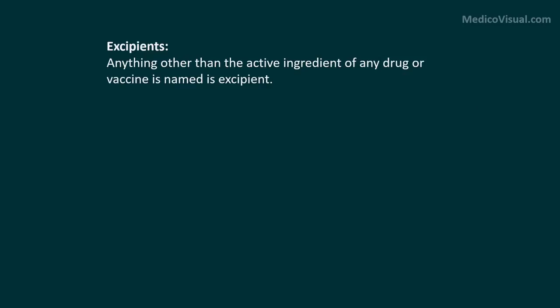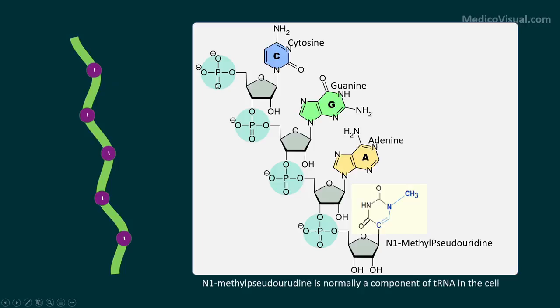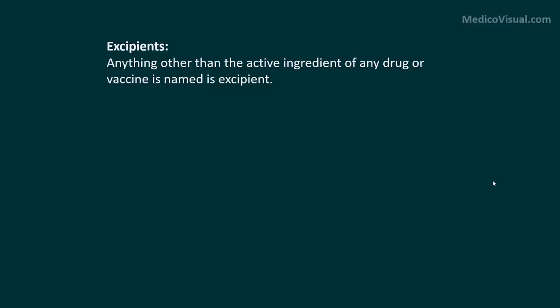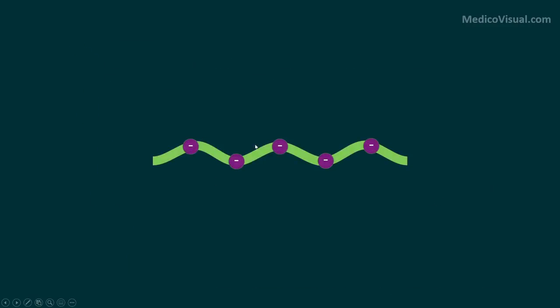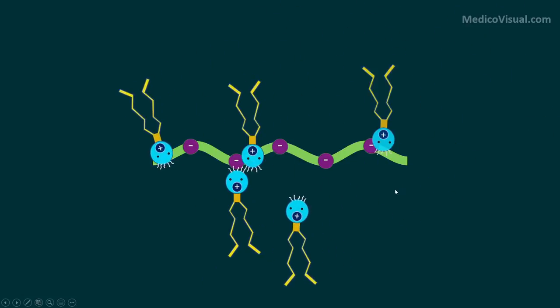Now, let's talk about excipients. Anything other than the active ingredient of any drug or vaccine is named as excipient. This is the negatively charged mRNA and by the way why it is negatively charged? It is negatively charged due to presence of these phosphate groups. These phosphate ions are negatively charged. Here is the negatively charged mRNA and this mRNA is then bound with what are these?